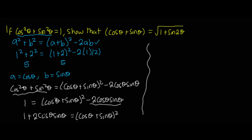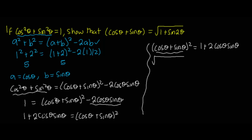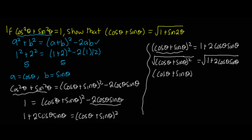Moving 2 cos θ sin θ to the right hand side, I'm going to get (cos θ + sin θ)² = 1 + 2 cos θ sin θ. Now I'm going to take the square root of both sides to make the bracket the subject. This gives me √[(cos θ + sin θ)²] = √(1 + 2 cos θ sin θ), so cos θ + sin θ = √(1 + 2 cos θ sin θ).